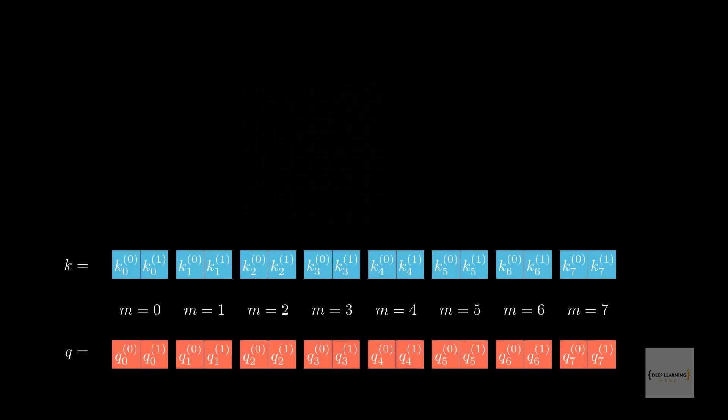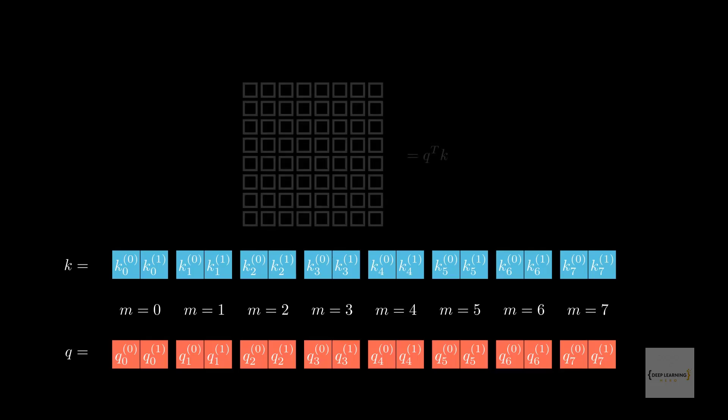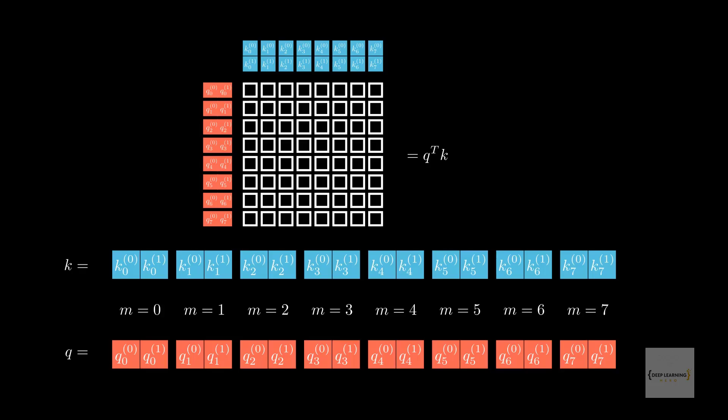The flagship computation of a transformer model is the self-attention layer computation, which revolves around three ingredients: queries, keys, and values. Out of these, queries and keys are used to compute the attention metrics. If you would like to learn about the end-to-end computation in transformer models, check out my video on the transformer model.